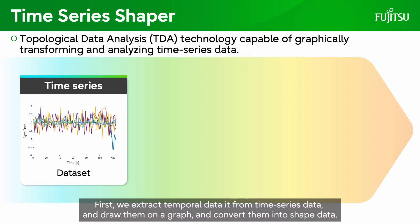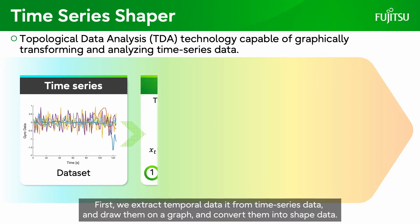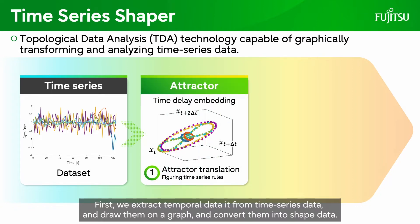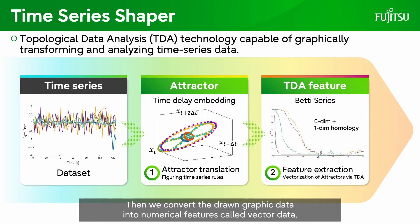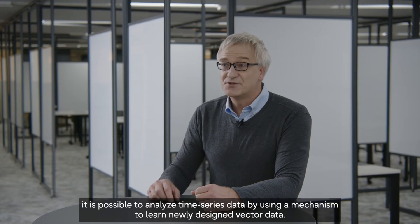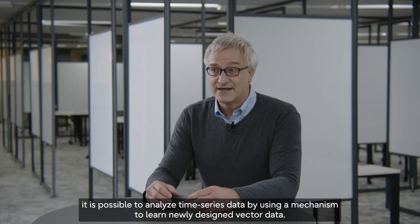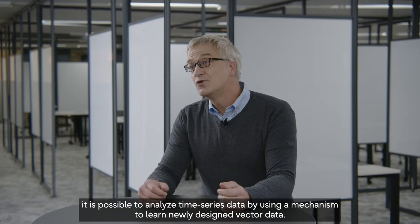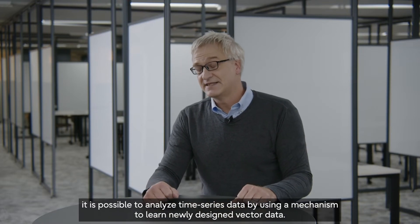First, we extract temporal data from time series data and draw them on a graph and convert them into shape data. Then, we convert the drawn graphic data into numerical features called vector data, which includes both size and directional information. Based on these results, it is possible to analyze time series data by using a mechanism to learn newly designed vector data.